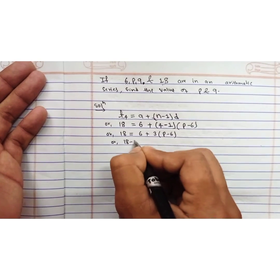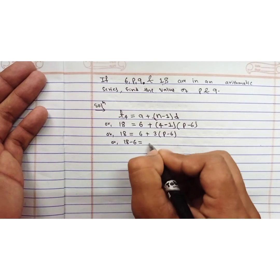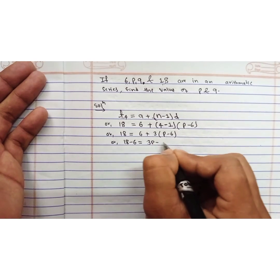Or 18 minus 6 equals, 6 is transposed to this side, and if we open the bracket by multiplying by 3, we get 3p minus 18.